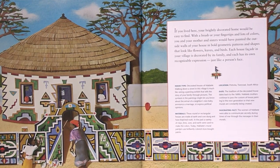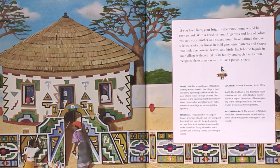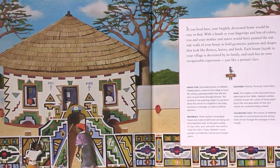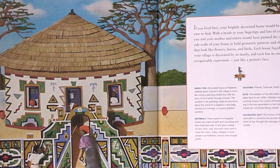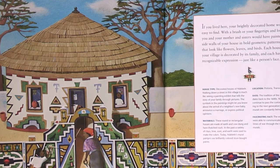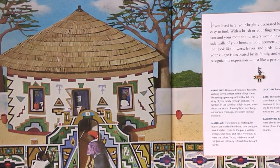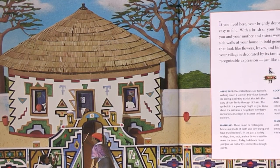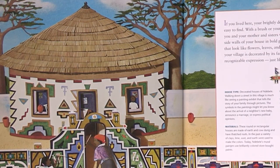If you lived here, your brightly decorated home would be easy to find. With a brush or your fingertips in lots of colors, you and your mother and sisters would have painted the outside walls of your house in bold geometric patterns and shapes that look like flowers, leaves, and birds. Each house in your village is decorated by its family and each has its own recognizable expression, just like a person's face.